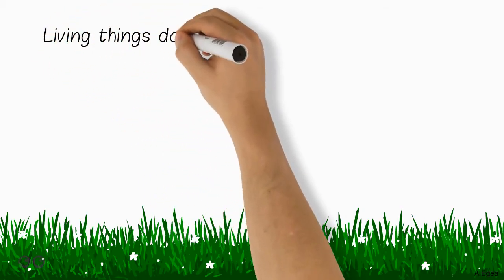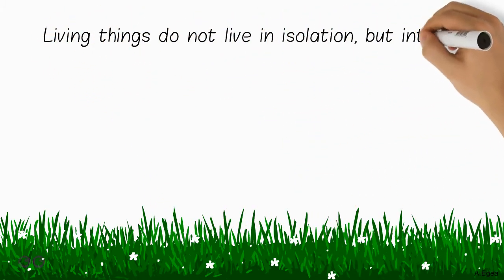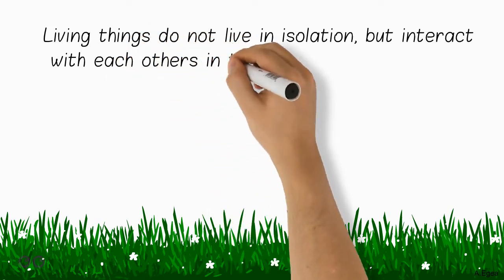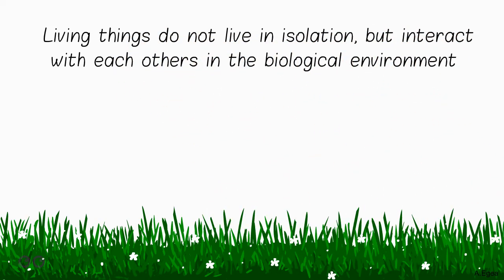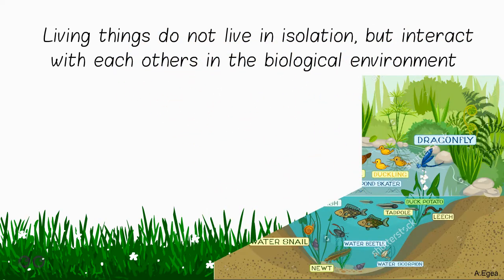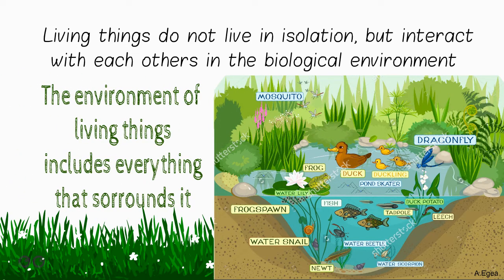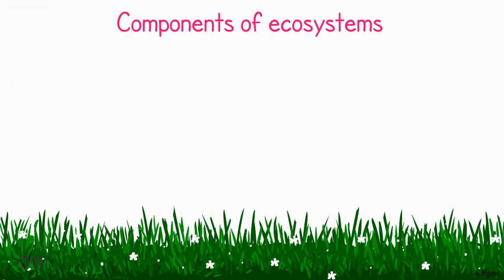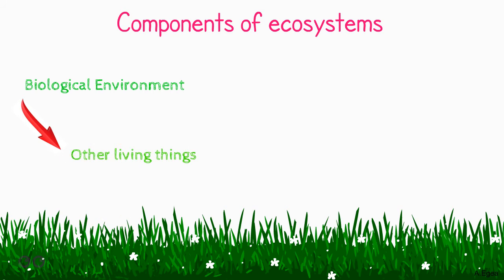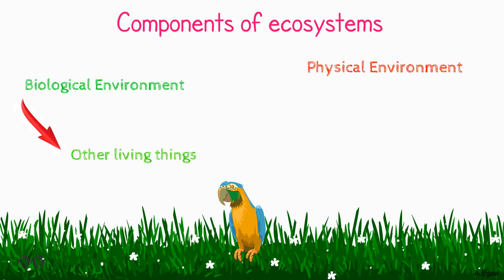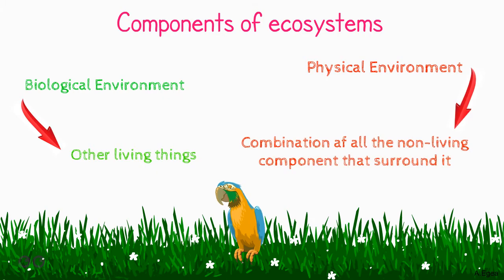Ecosystems: living things do not live in isolation but interact with each other in the biological environment. The environment of living things includes everything that surrounds it. Components of ecosystems include the biological environment, which consists of other living things, and the physical environment, which is the combination of all non-living components that surround it.